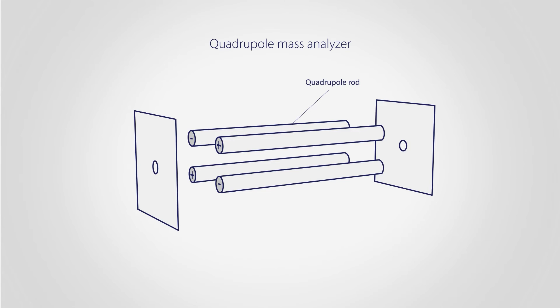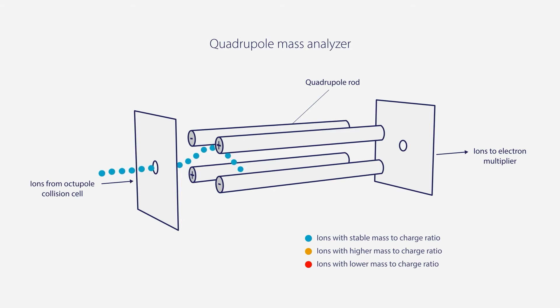The oscillating field applies an oscillating force to ions moving through the quadrupole. Their resulting trajectories depend on their mass to charge ratio and the magnitude of the voltages on the rods. For given magnitudes of AC and DC voltage, only ions with a specific mass to charge ratio will have a stable trajectory and can travel down the length of the quadrupole to reach the detector.